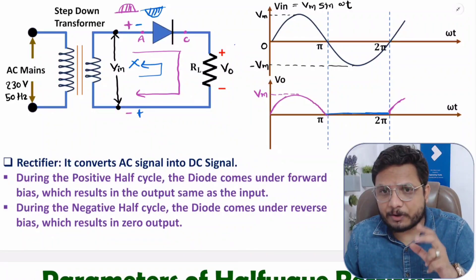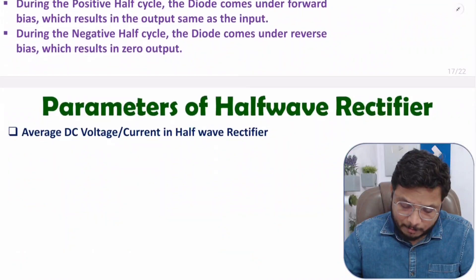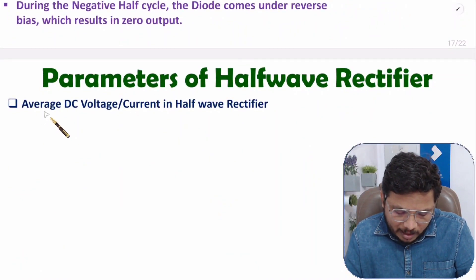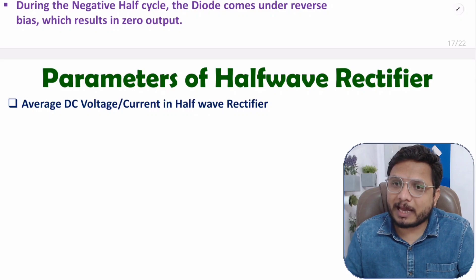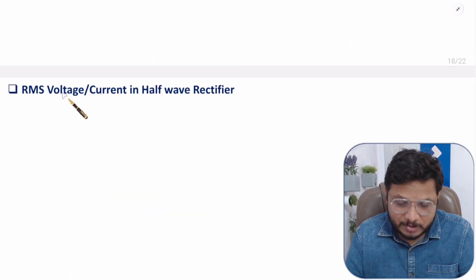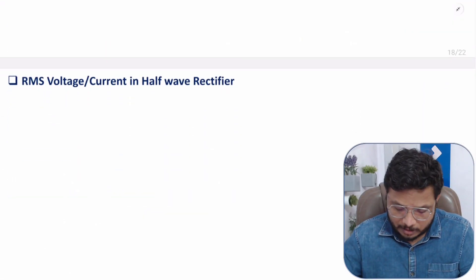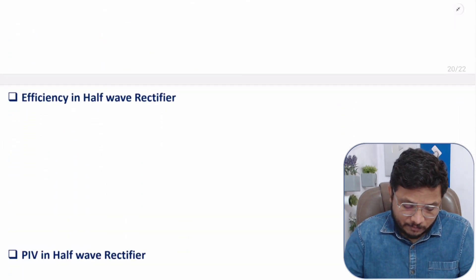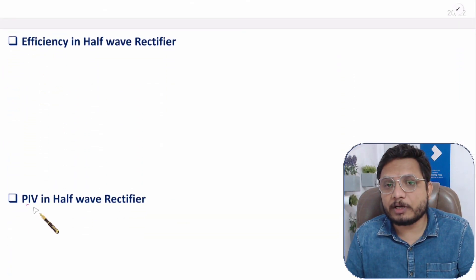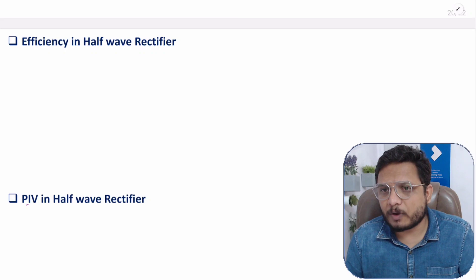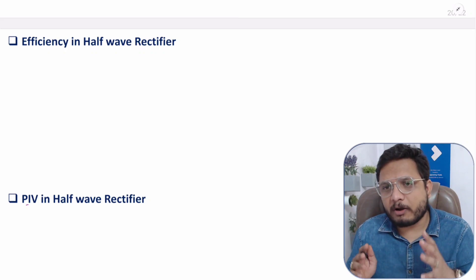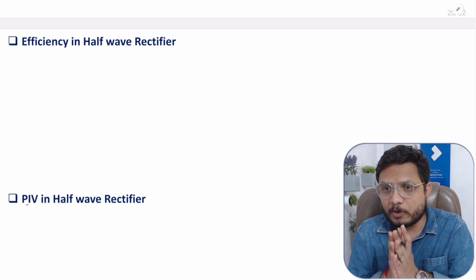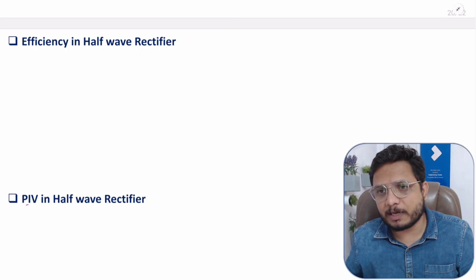In my next video I will explain the parameters of the half wave rectifier, including how to calculate average DC voltage, RMS value, form factor, ripple factor, efficiency, and peak inverse voltage. I hope you have understood this. If you have anything to share, please note it in the comment section — I'll be happy to help. Thank you so much for watching.